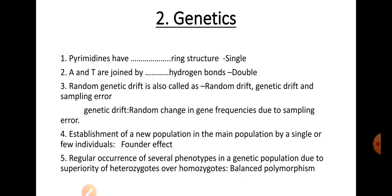The third question: Random genetic drift is also called Random Drift, Genetic Drift, and Sampling Error. Random genetic drift refers to random changes in gene frequencies due to sampling error — errors caused by human or environmental factors. Genetic drift is also found when we have a smaller population.